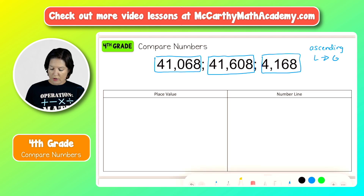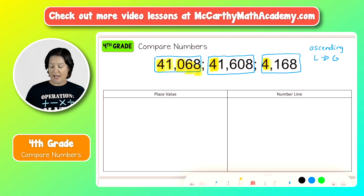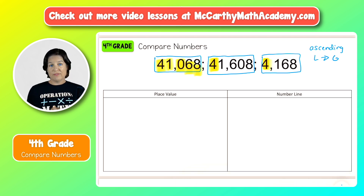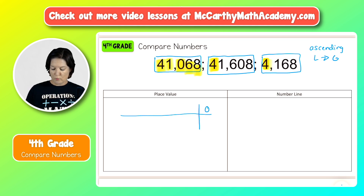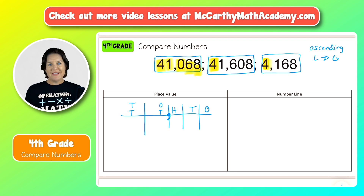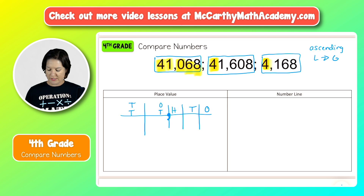That's what we're going to focus on first. Here you can see I've got a space to do some place value work and a space to record a number line. Let's start with place value. We're going to the ones, tens, hundreds, one thousands, and ten thousands place. The highest in our set is the ten thousands, so I need a place value chart that goes to ten thousands. I'll write in shorthand: ones, tens, hundreds — that's where we separate the period — then one thousands and ten thousands.